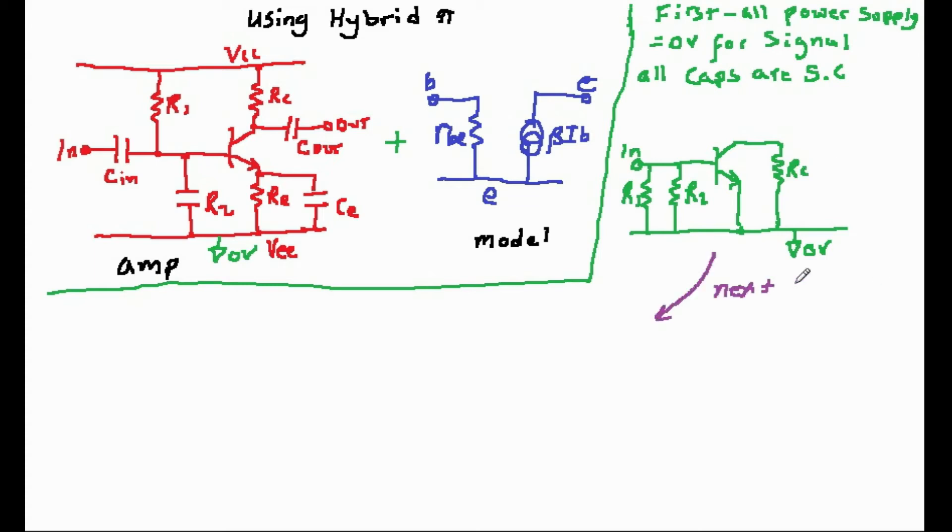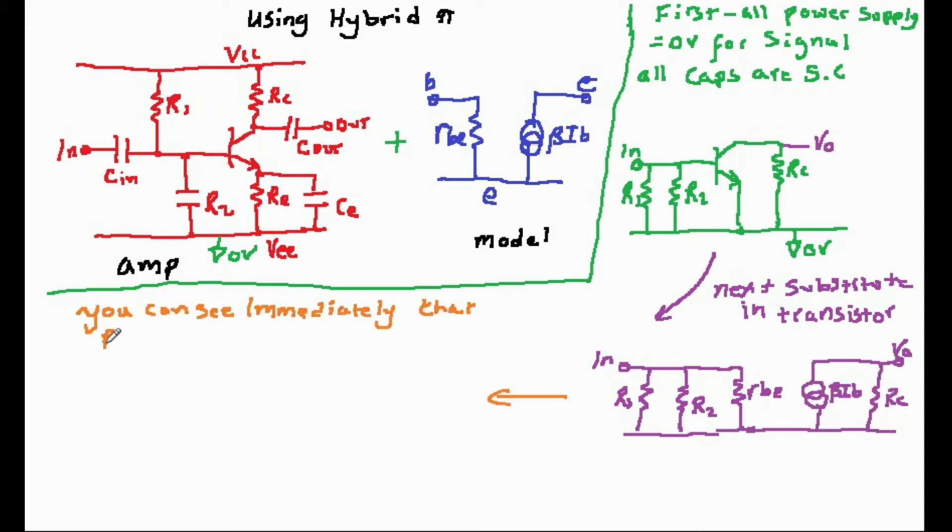Now, let's replace the transistor with the model. You can see immediately from this that R in is equal to R1 in parallel with R2 in parallel with RBE.